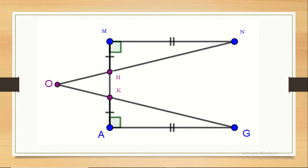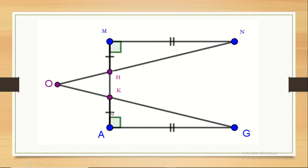Next exercise: we have triangles HMN and KAG, and we want to prove they are congruent. From the figure's coded properties: KA equals HM (same indication), the included angles are equal (90 degrees, coded), and MN equals AG (coded property). Since these are side, angle, side — all adjacent to each other — we can say these two triangles are congruent by Side-Angle-Side.